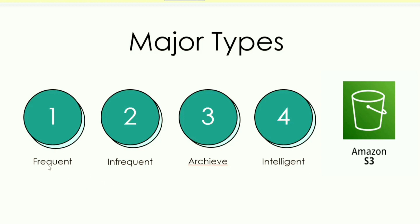What is Frequent storage? If we upload an object in S3, it will be Standard by default. Frequent is used day to day — if we upload and download an object daily, we will use Frequent. If usage is monthly once or twice, we can move out of Frequent classes.